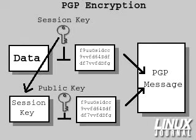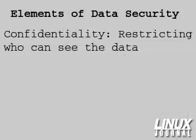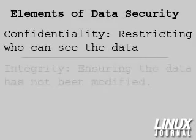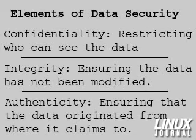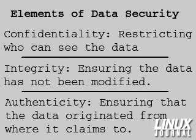Encryption with PGP takes care of the part of data security known as confidentiality, which is restricting the number of people who can see the data. Sometimes confidentiality is not necessarily what we need. Two other areas of data security that PGP takes care of are integrity and authenticity. Integrity is ensuring that the data has not been modified in the process of transmission. Authenticity is ensuring that the data originated from where it claims to have originated from.